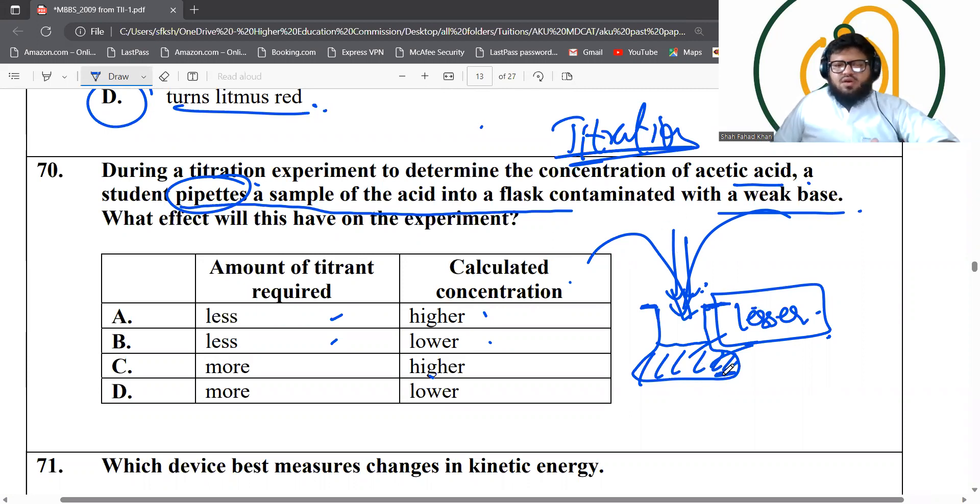The concentration will calculate the concentration because some quantities are here to neutralize the acid. Now, because some of the acid has already been neutralized. So the calculated concentration will also going to be lesser. Yeah, lower. You can quantity required to neutralize. Just a quick recap of this entire thing.